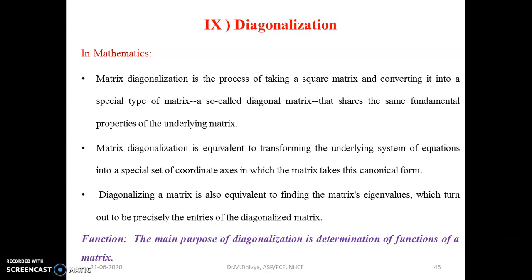Matrix diagonalization is equivalent to transforming the underlying system of equations into a special set of coordinate axes in which the matrix takes its canonical form. It is also equivalent to finding the matrix eigenvalues, which turn out to be precisely the entries of the diagonalized matrix. The main purpose is to determine the functions of the matrix.